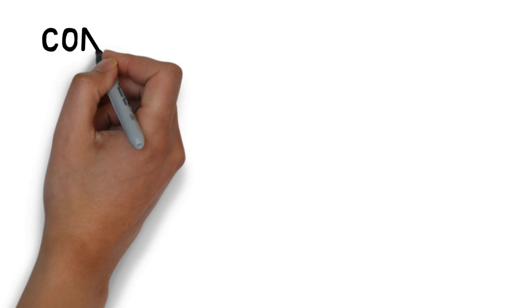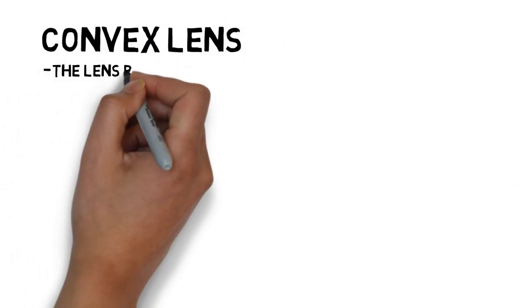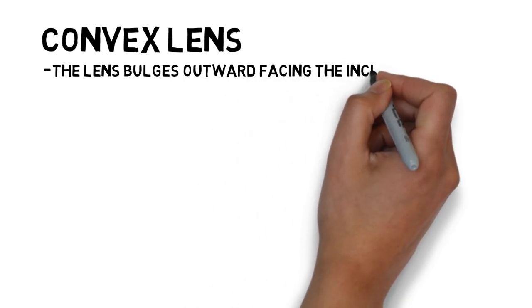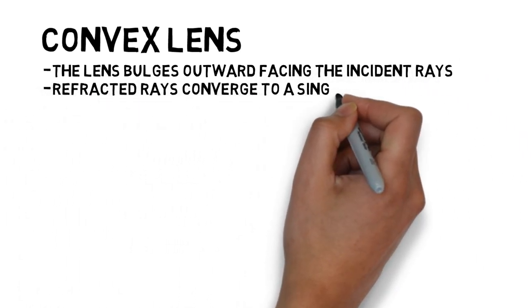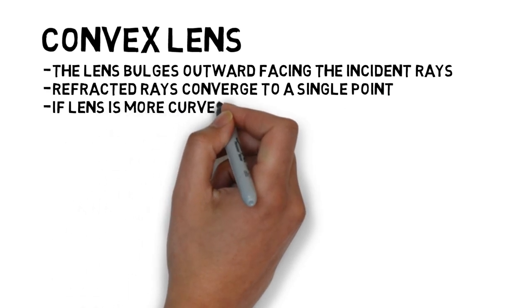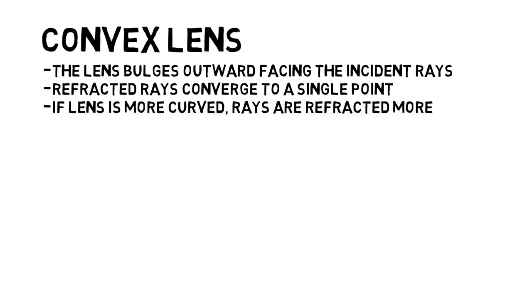Now let's move on to convex lenses. Some key points about convex lenses include that the lens bulges outward facing the incident rays, refracted rays converge to a single point, and if lenses are more curved, the rays are more refracted. It is crucial to note that the image characteristics of a convex lens, such as orientation, location, magnification, and type vary depending on an object's distance from the lens.